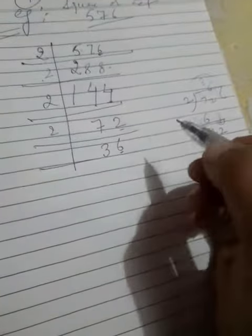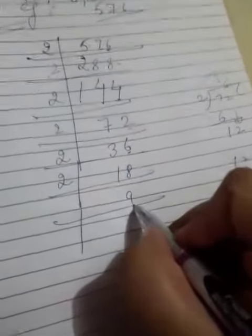Again 6 is divisible by 2. Divide by 2. 2 times 18, then 2 times 9 is 18. Then 9 is not divisible by 2. Let us check again.